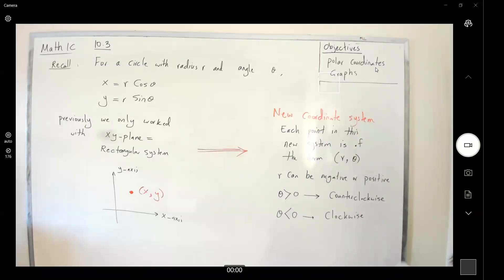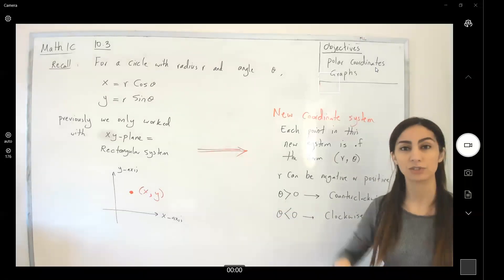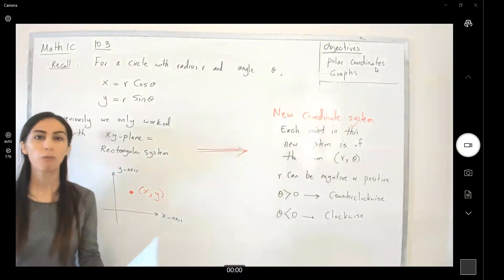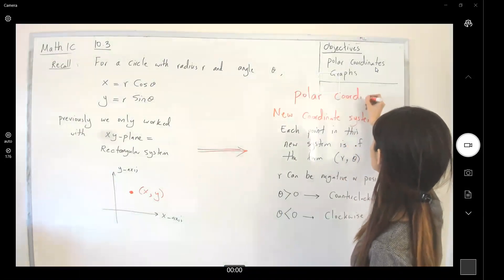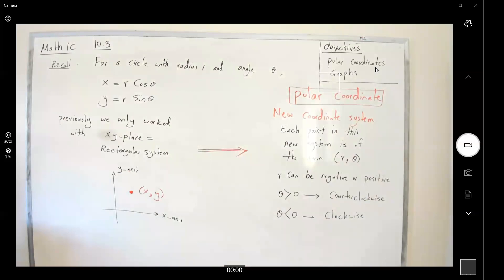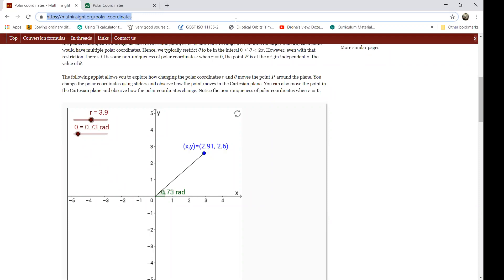Before going over any algebra or plotting any points, let's visualize this and see what's going on with the relation between these two coordinate systems — what happens to a point in this new polar coordinate system. We're using an applet to help visualize it better. Here you have x and y, meaning you are in the Cartesian coordinate system, the x-y plane, also called the rectangular coordinate system.